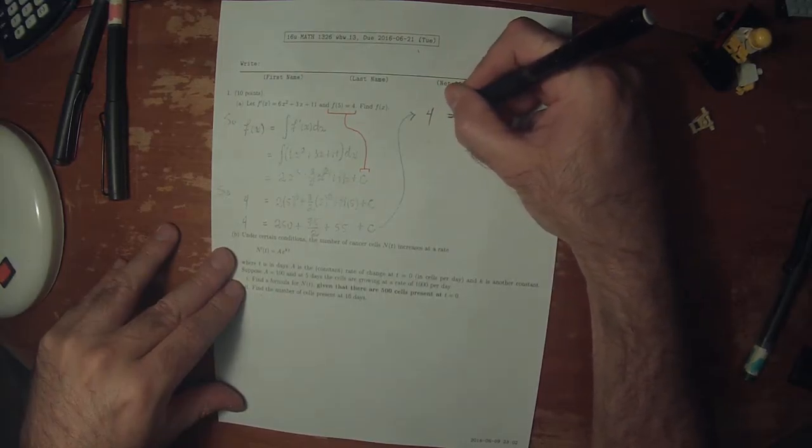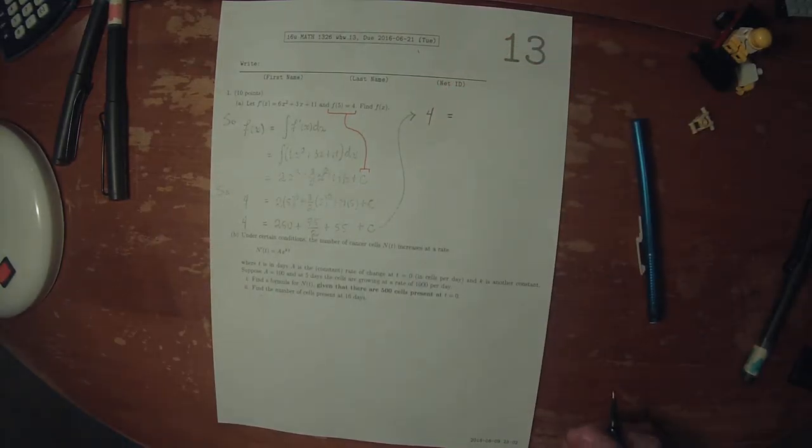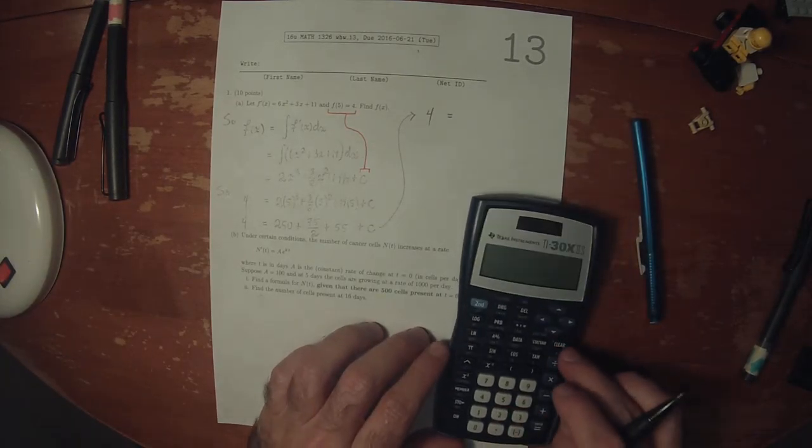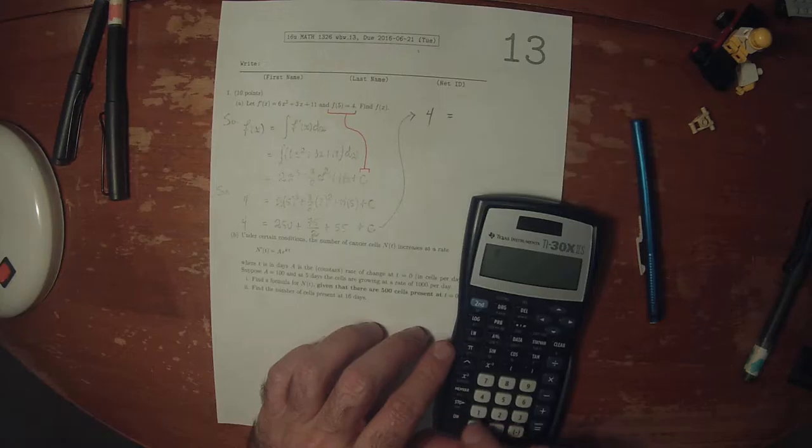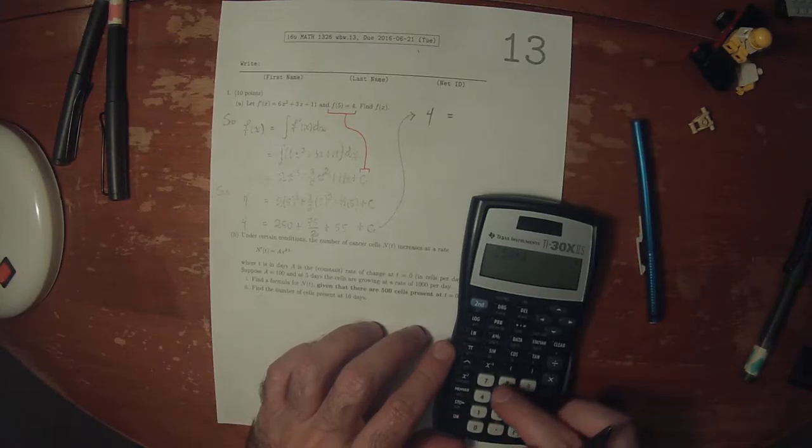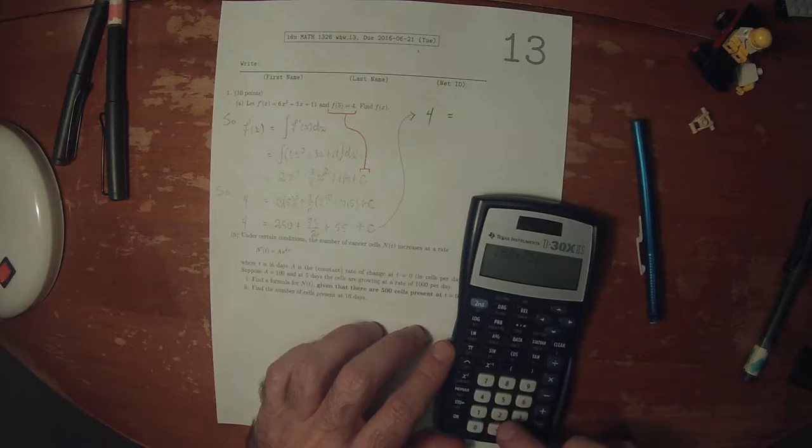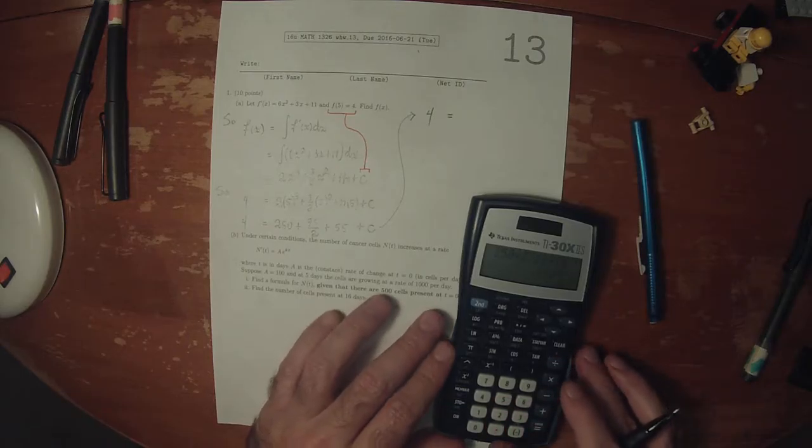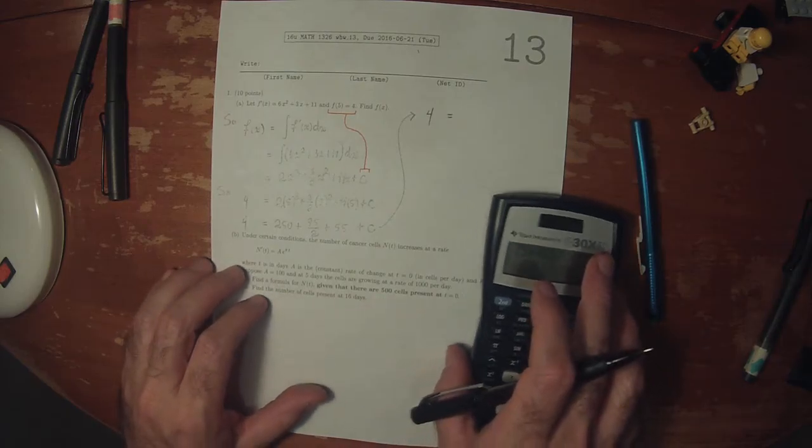So 4 is equal to, I'll use the calculator, 250 plus 75 over 2, plus 55, 342.5, plus C.